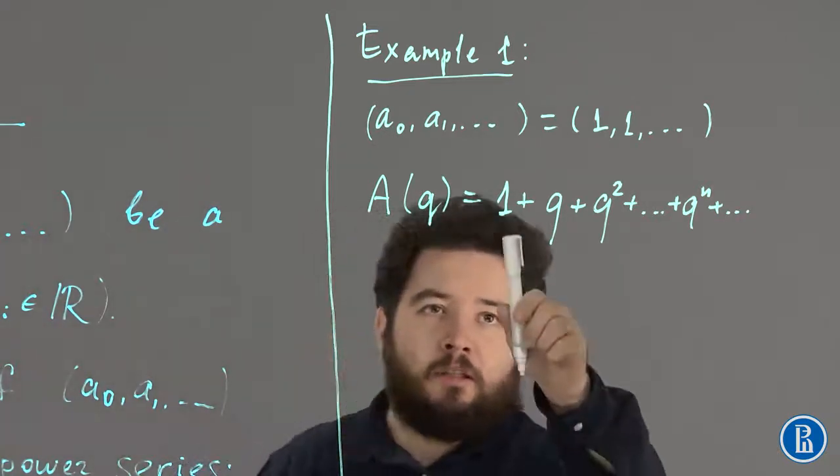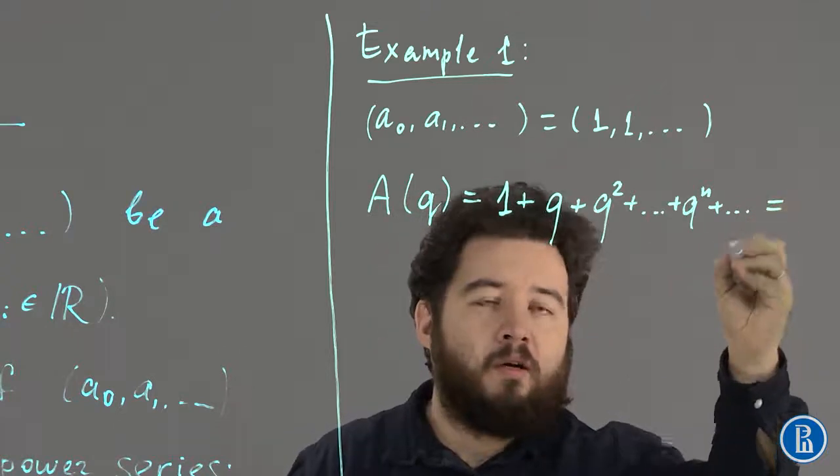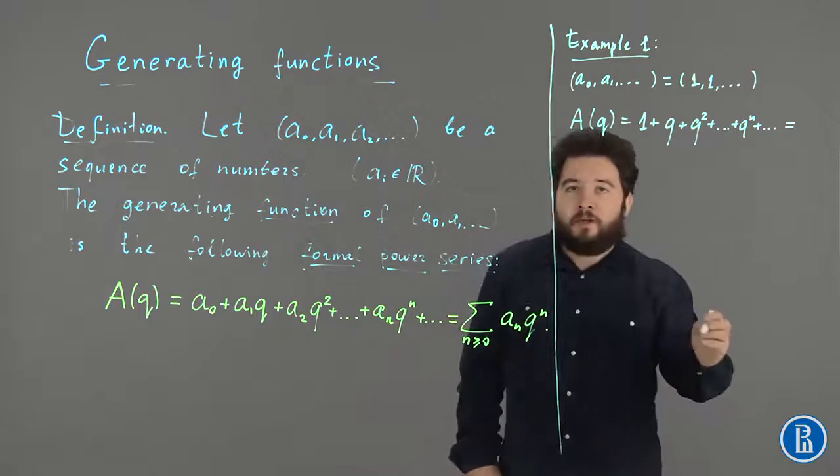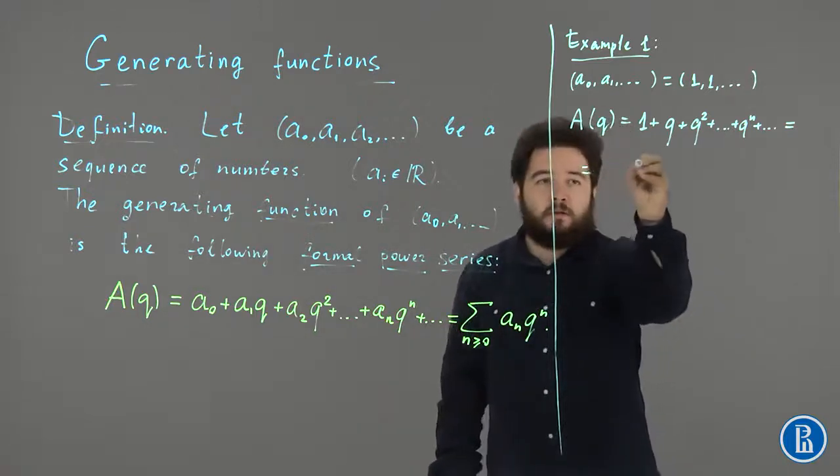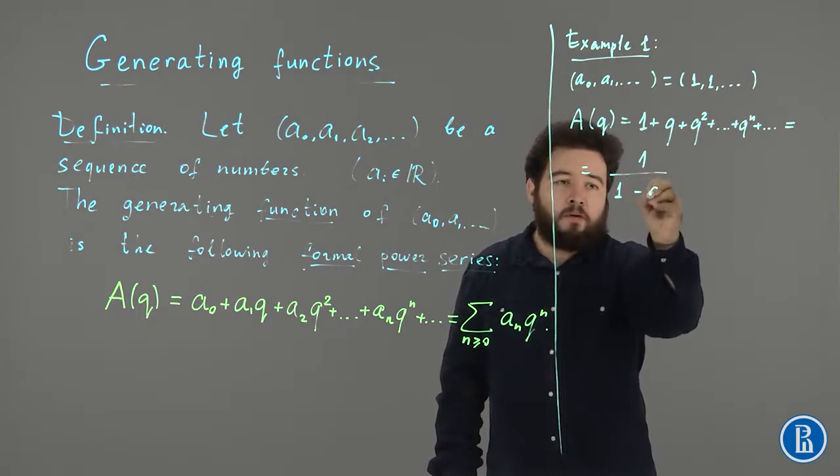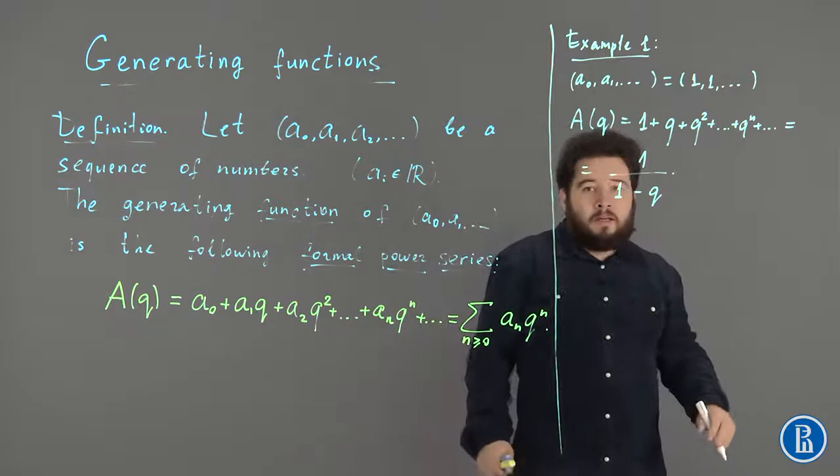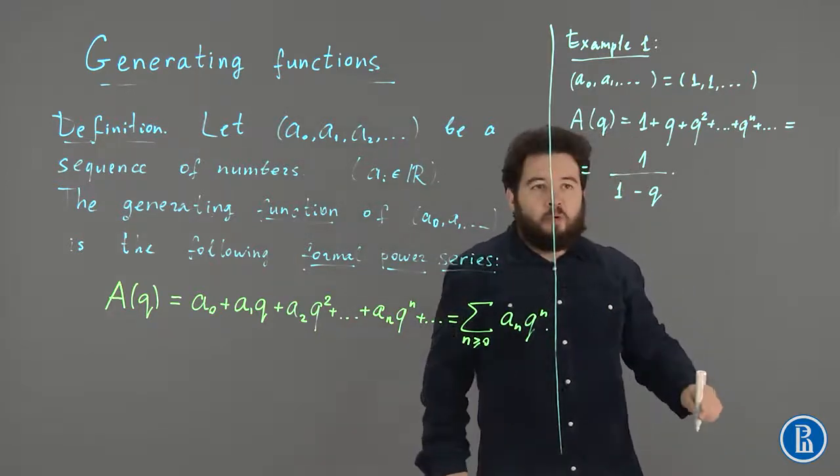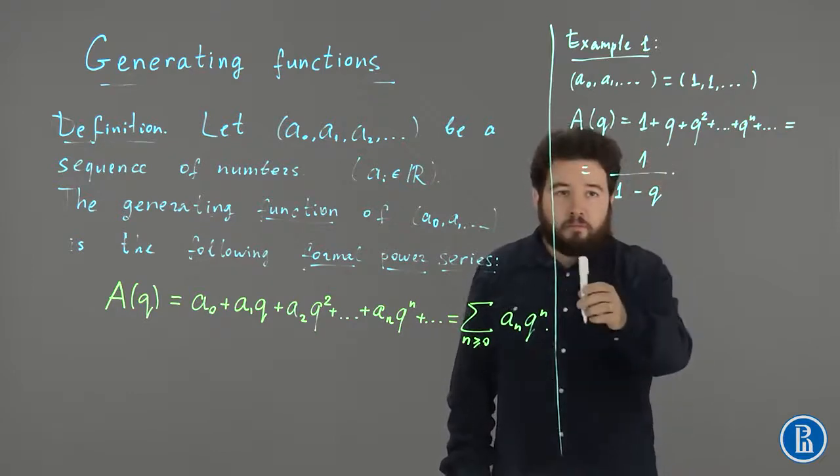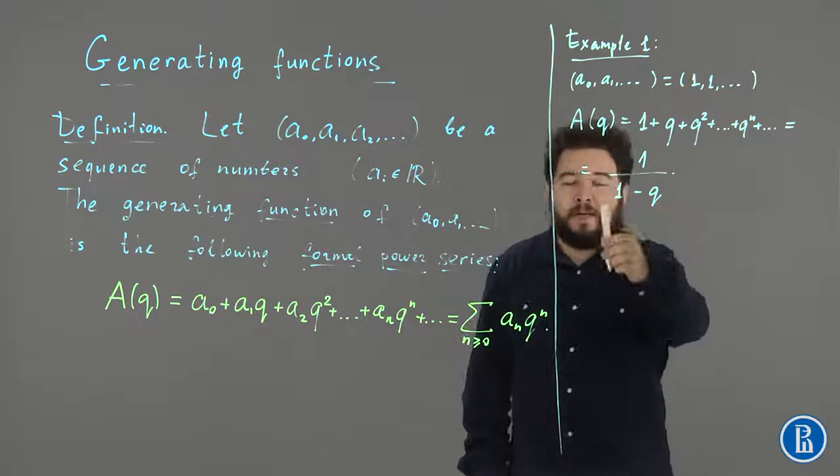So, this is just the geometric progression with the common ratio Q, starting with 1. And we know how to compute the sum of this progression. This is 1 divided by 1 minus Q. Well, a little bit later we will explain how to understand this equality formally. What does this expression mean?